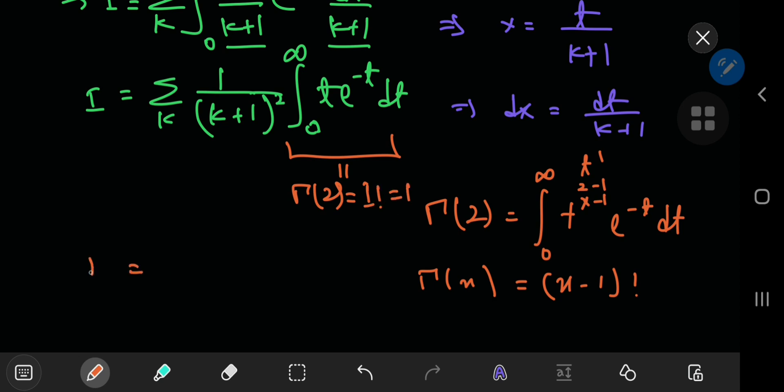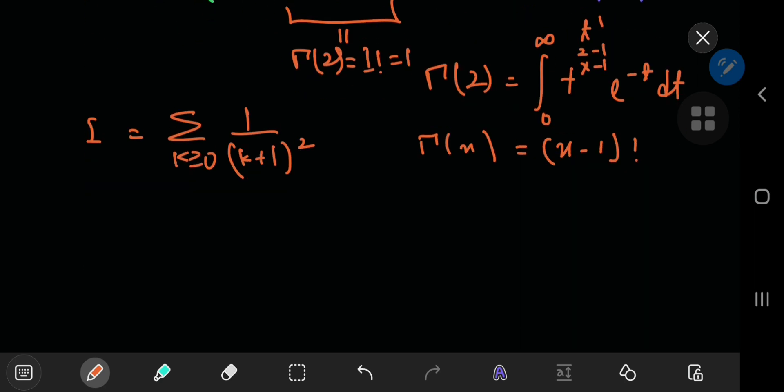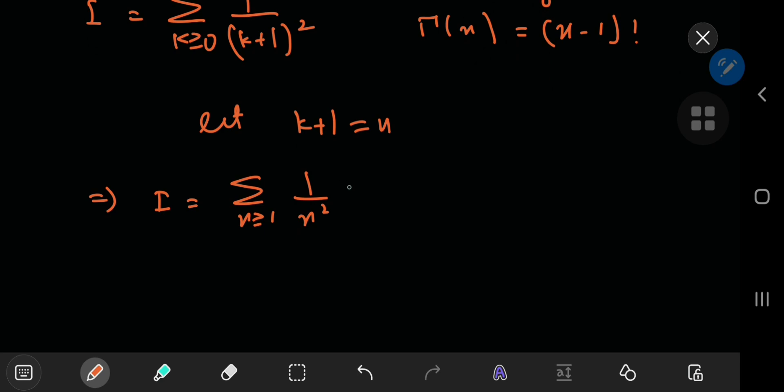So that means i equals the sum over k of 1 by k plus 1 squared. And if you replace k plus 1 by n, then that means i equals the sum over positive integers of 1 by n squared. Now we've proved this result, which is of course the Riemann zeta function evaluated at 2. We've proved in a previous video, link in the description, that this equals pi squared by 6, which is quite an excellent result.